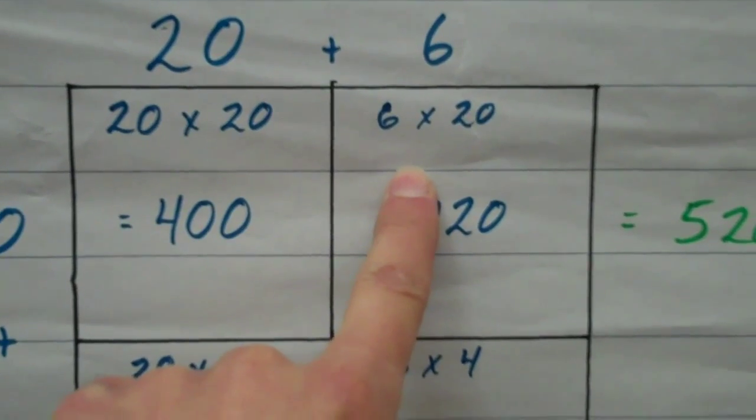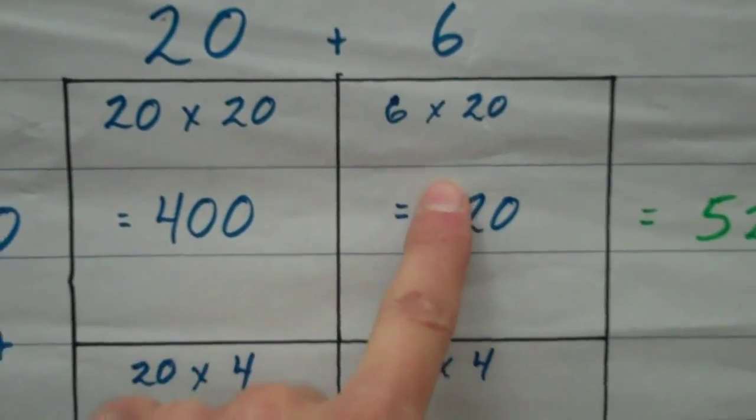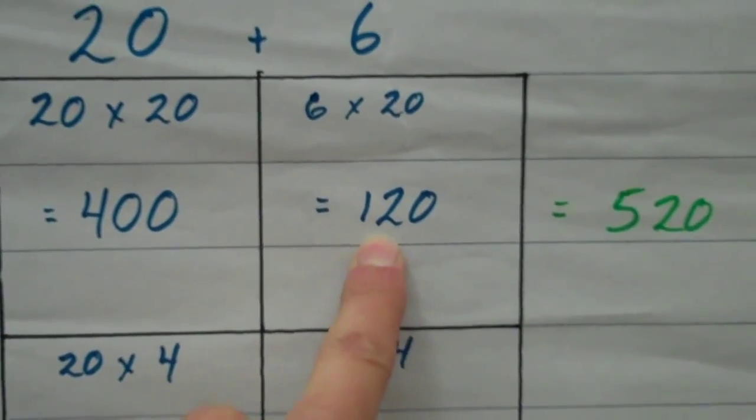In this box, I'm going to take 6 and 20, multiply those two numbers together, which will give me 120.